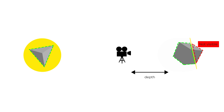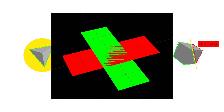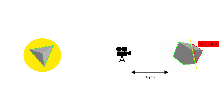When both pixels have the same depth, z-fighting occurs — that glitch when two objects occupy the same space. As for render order, Three.js sorts objects by their distance from the camera and renders them in that order, but we can change that by updating the render order property of the objects.